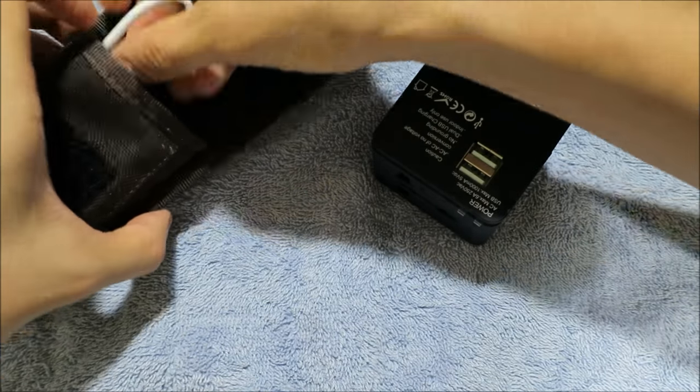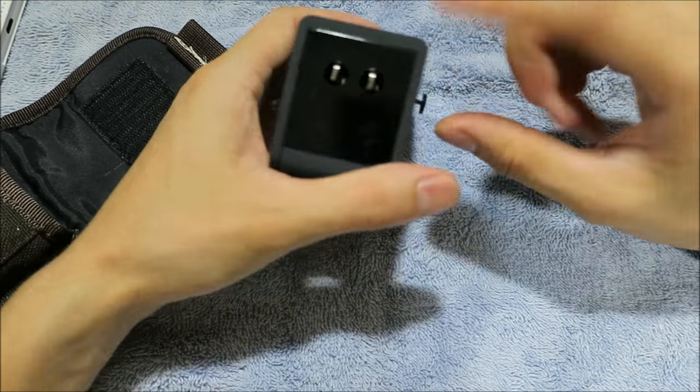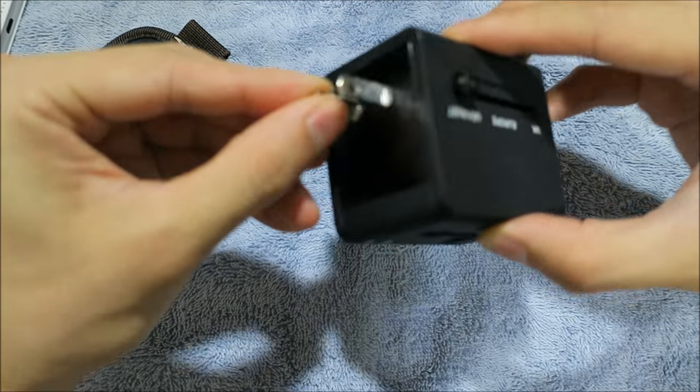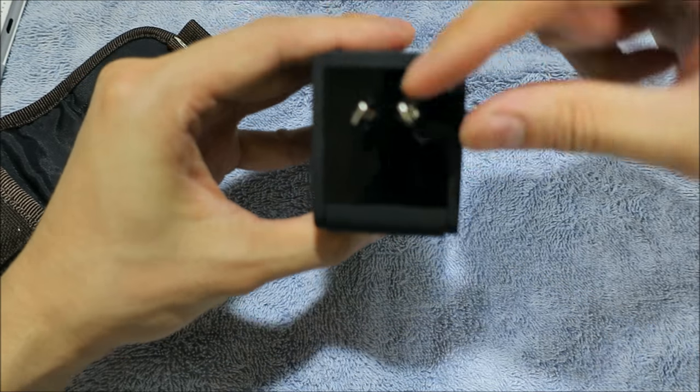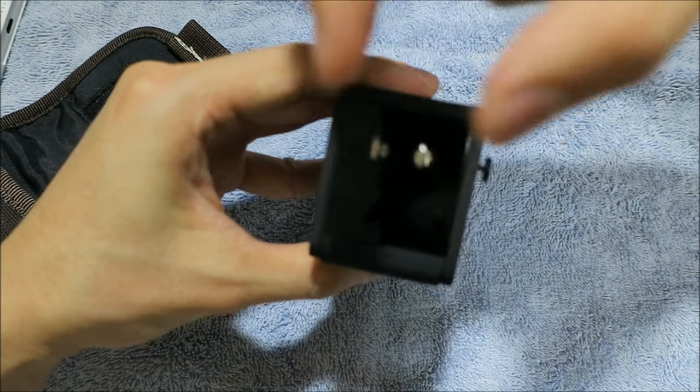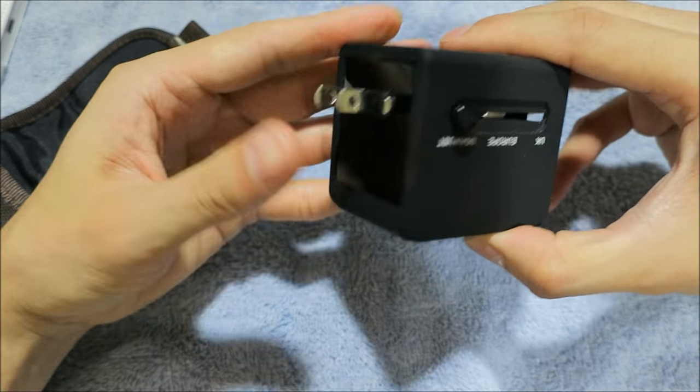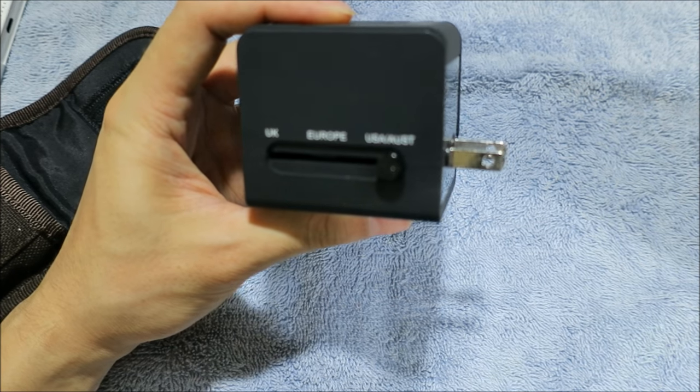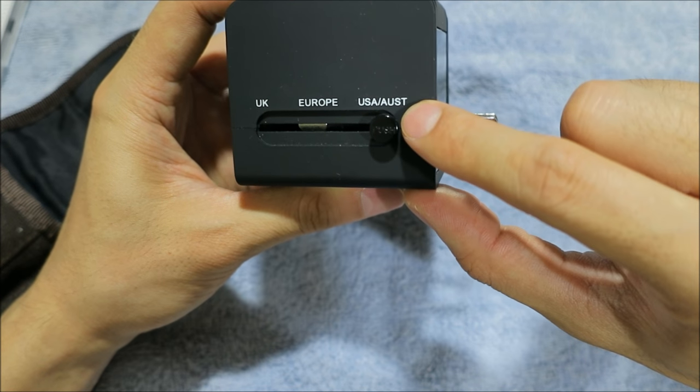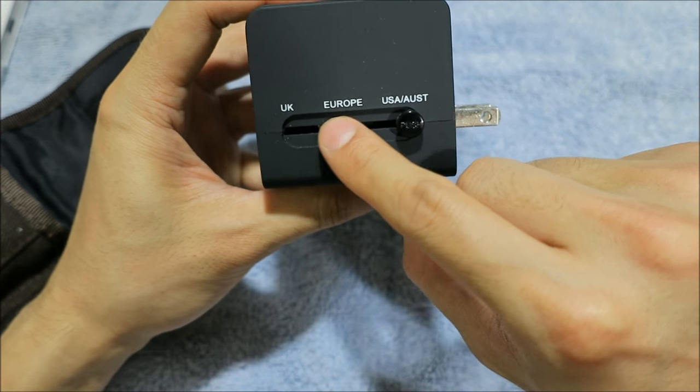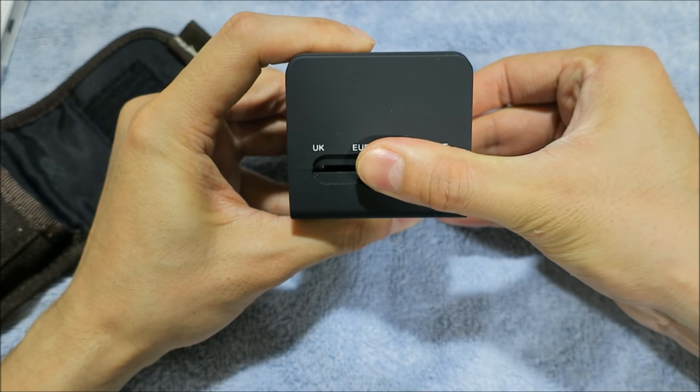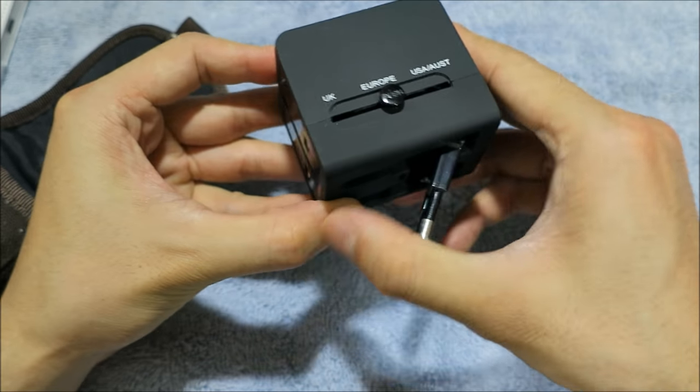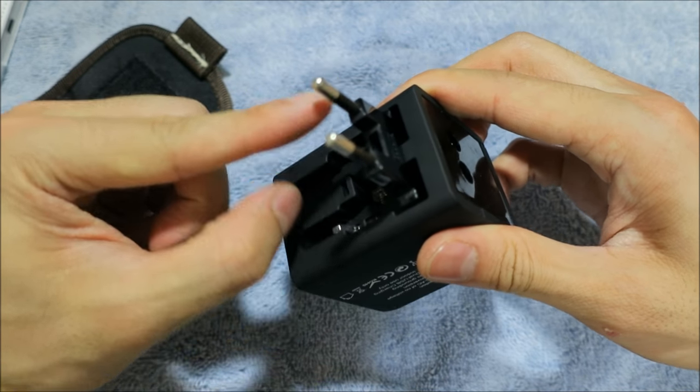See these sockets? They're flexible, so it doesn't matter if it uses an angled one or a parallel style one, you can adapt. It's got the markings: USA and Australia, Europe, and then UK. So what does Europe look like? You press down there, spring loaded, and we got the European style one.